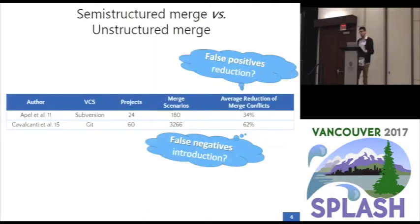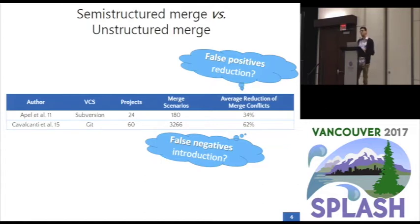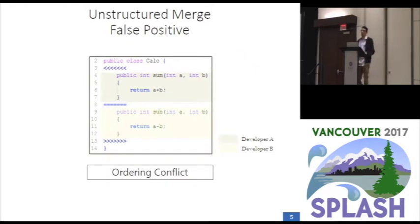Previous studies compared these two merge approaches with respect to the number of reported conflicts, showing for most projects and merge situations a reduction in favor of Semi-Structured Merge. For instance, in merge situations where Semi-Structured Merge reduced the number of reported conflicts, Appel et al. show an average reduction of 34%. We, in a replication of that study with a different sample, found an even greater average reduction of 62% again in favor of Semi-Structured Merge. This reduction is mainly due to automatic resolution of Semi-Structured Merge false positives, which are reported when developers add different and independent method declarations to the same text area, also called ordering conflicts.